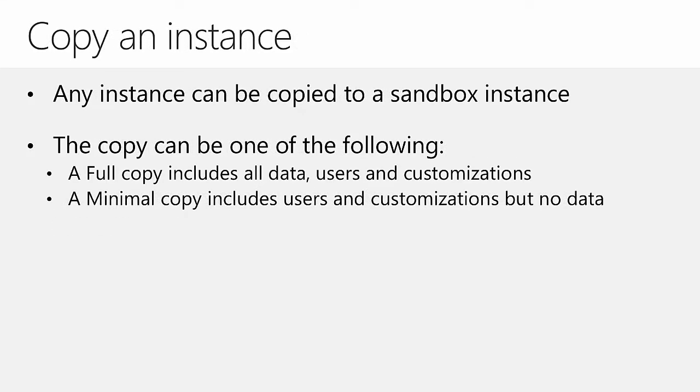Copying an instance is the best way to ensure that customizations, configuration, and data are exactly the same between instances. This process is only available for sandbox environments — you can copy from either a sandbox or production environment, but the receiving instance must always be a sandbox. A full copy includes all data, users, and customizations from one instance to another, which is excellent for creating an exact replica for training or to test how customizations will behave after an upgrade. Enough storage space must be available for a full copy to complete.